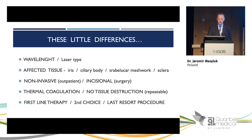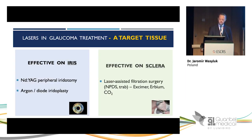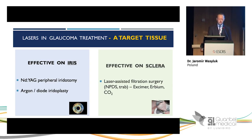We can look at laser therapy by the place it has in the therapeutic algorithm — it may be first-line treatment, secondary therapy, or sometimes only the last resort procedure. By targeting tissue, we have lasers effective on the iris, such as the very well-known peripheral iridotomy by YAG laser, or argon/diode iridoplasty.